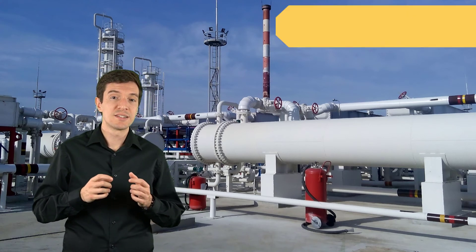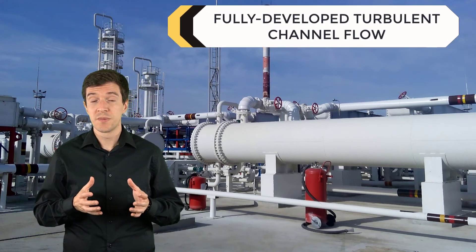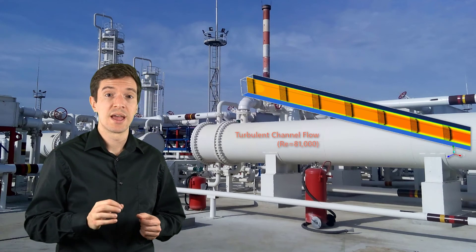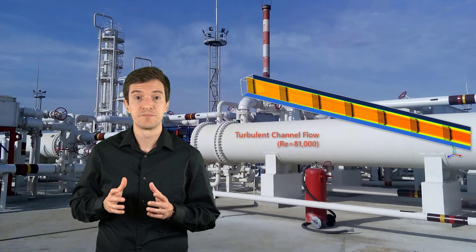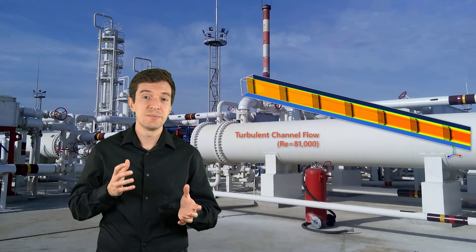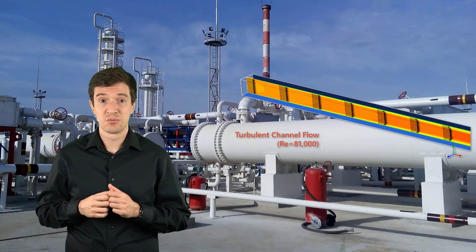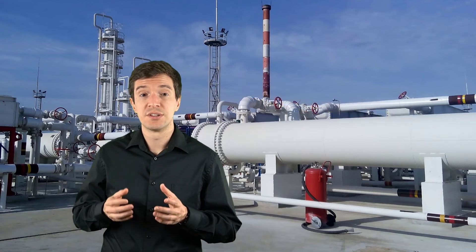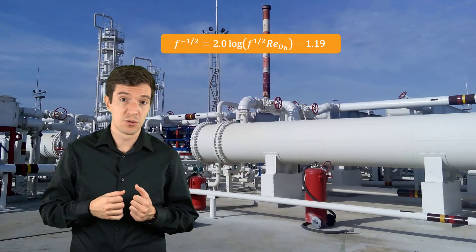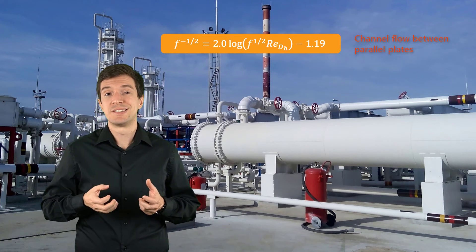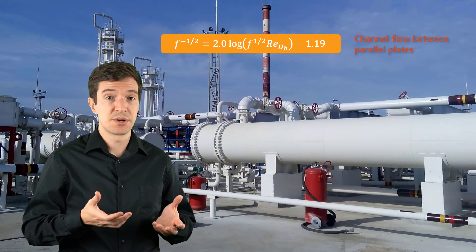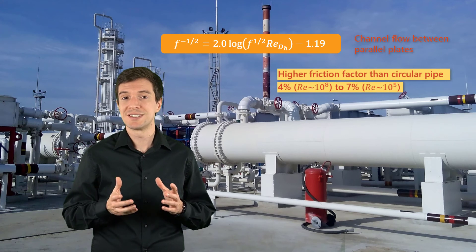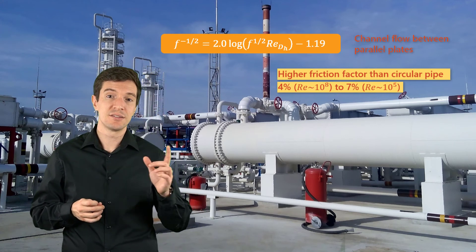Now, let's consider a turbulent channel flow between two parallel plates. If we take a look at the velocity contours and velocity vectors along the channel, we can see that it looks similar to what we have seen in the round pipe. Indeed, using a similar analysis, we can obtain an expression for the Darcy friction factor for the channel flow. This expression is very close to the circular pipe expression we derived before, and predicts a friction factor about 4 to 7% higher than in the circular pipe.